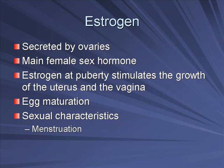Estrogen is the key female sex hormone; it is secreted by the ovaries — the paired structures where eggs are developed. Estrogen really kicks in at puberty, and it's what stimulates the growth of the uterus and the vagina, basically preparing the woman to be able to carry a child. Estrogen is also responsible for the maturation of eggs, getting those eggs ready and mature so that when ovulation happens, they could potentially be fertilized.